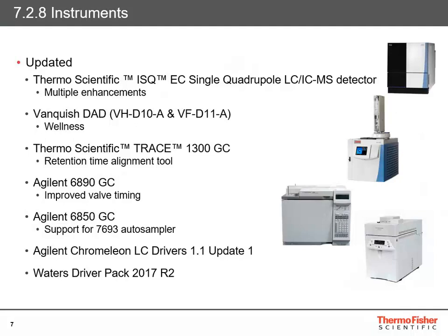When working in the real-time scan window, the user can copy the scan settings from that window and paste them into the instrument method. The Vanquish diode array detector has been updated to include a wellness device, in line with other Vanquish modules. The Thermo Scientific Trace 1300 GC has a new retention alignment tool on the inlet tab of the instrument method, which compensates for changing column conditions by adjusting flow or pressure to maintain the same retention times. The Agilent 6890 GC timed events for valves are now entered in a table on a dedicated instrument method tab and sent to the instrument at the start of the run, giving better accuracy compared to defining valve events in the method script. The Agilent 6850 now supports the 7693 autosampler and includes the same valve events management improvements as the 6890 driver.